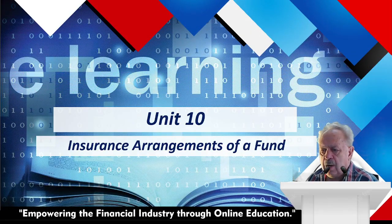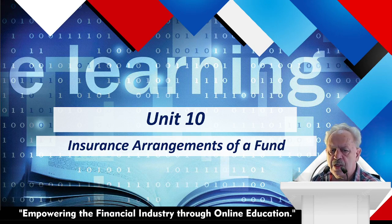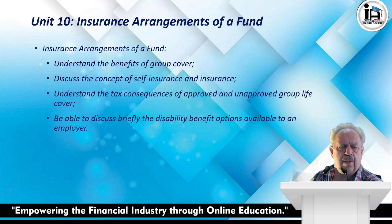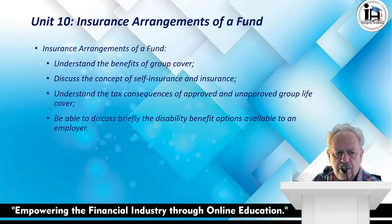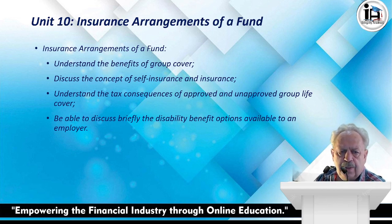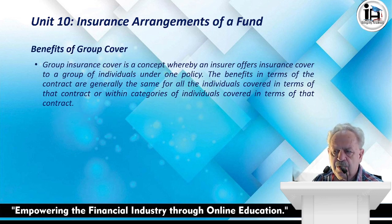Welcome back. We are now busy with our second last unit - Unit 10: Insurance Arrangements of a Fund. This is still part of class of business for retirement fund benefits. Here we need to understand the benefit of group cover, discuss the concept of self-insurance versus insurance, understand the tax consequences of approved and unapproved group life cover, and be able to discuss briefly the disability benefit options available to an employer.